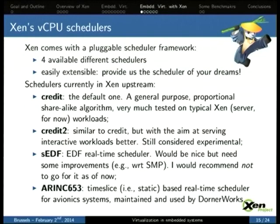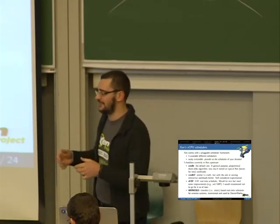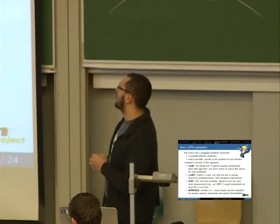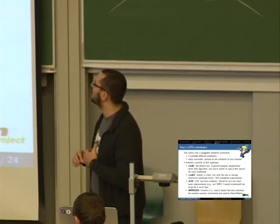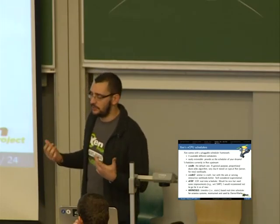Xen has a VCPU scheduler. In fact, it has more than one. It has a very nice and easy-to-extend scheduling framework, which is comfortable for someone to look at and learn how to write their own implementation of their preferred scheduling algorithm. In the upstream Xen repository, Xen comes with four schedulers.